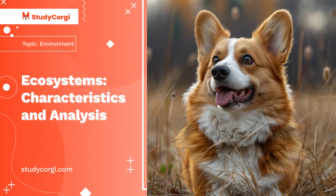Marine ecosystems are the largest of all ecosystems because all the oceans and parts of them are included. They contain salt marshes, littoral zones, estuaries, lagoons, mangroves, coral reefs, deep sea, and seafloor. The marine ecosystem has unique flora and fauna and supports a vast realm of species.